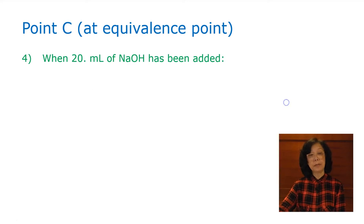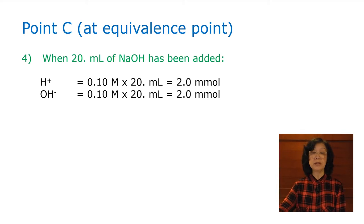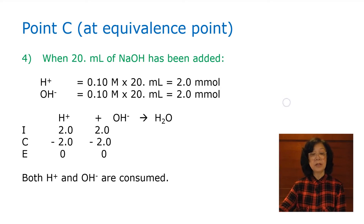Now, at the equivalence point, when 20 milliliter of sodium hydroxide is added, we have 2 millimole of both H plus and OH minus. These will be used up, and we just have water, which has a pH of 7.